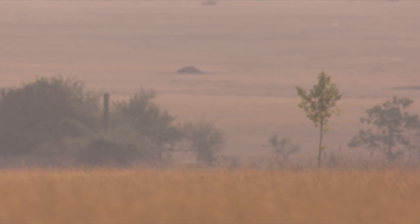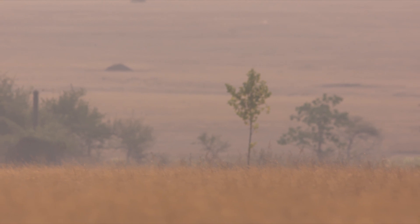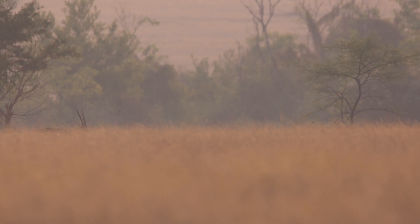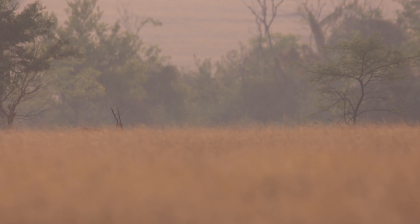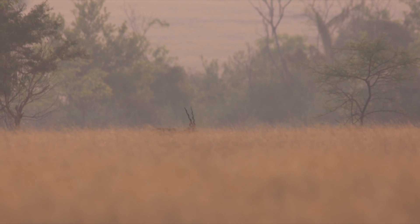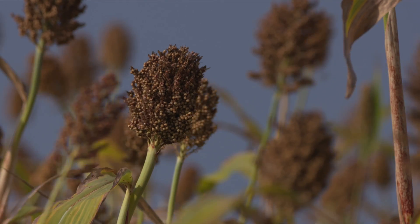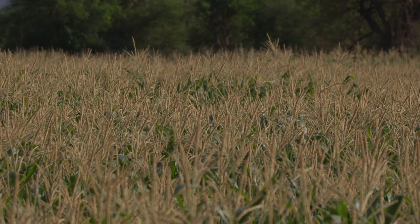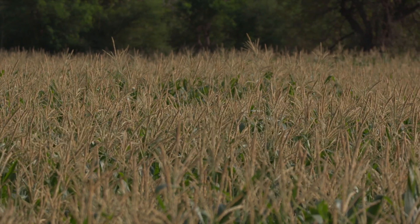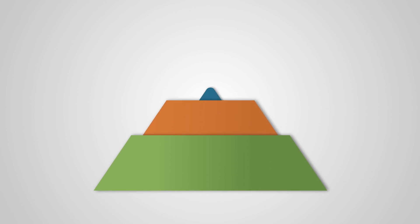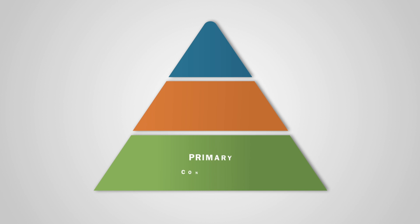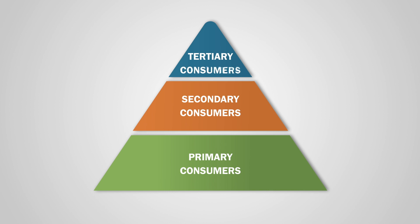We should remember that grasslands are repositories of wild relatives of cultivated grasses, including species like paddy, wheat, jowar, and other millets. The consumers in a grassland ecosystem are of three levels: primary consumers, secondary consumers, and tertiary consumers.